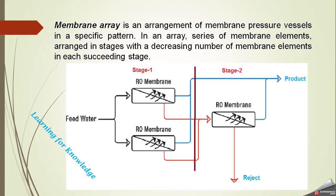In an array, many membrane elements are arranged in stages with a decreasing number of membrane elements in each succeeding stage. If you look at this diagram, feed water enters two RO membranes in the first stage, and then in the next stage the water enters another RO membrane. This entire setup is called an array. As you can see, the number of membranes decreases as we move from the first stage to the next. This arrangement of membrane elements is called an array.